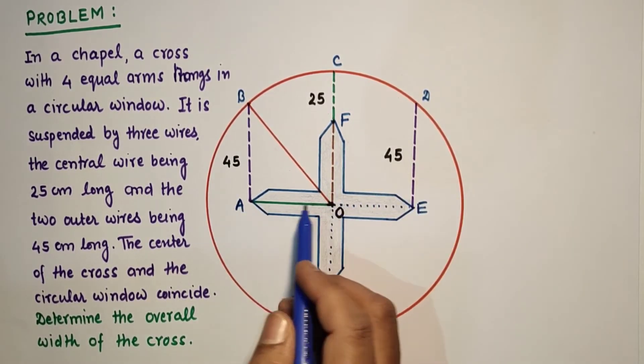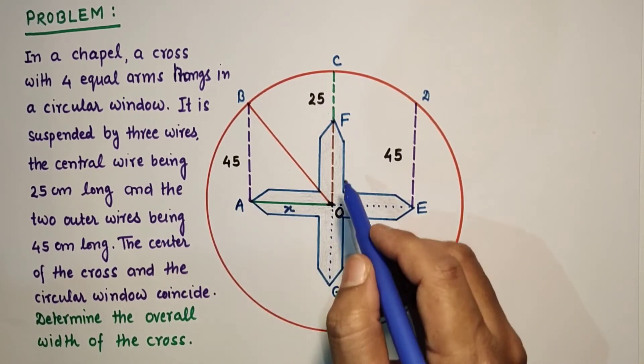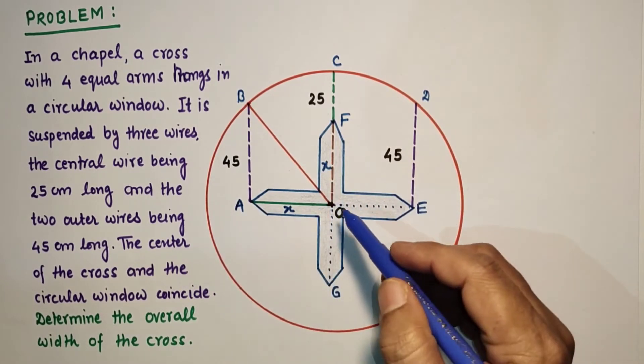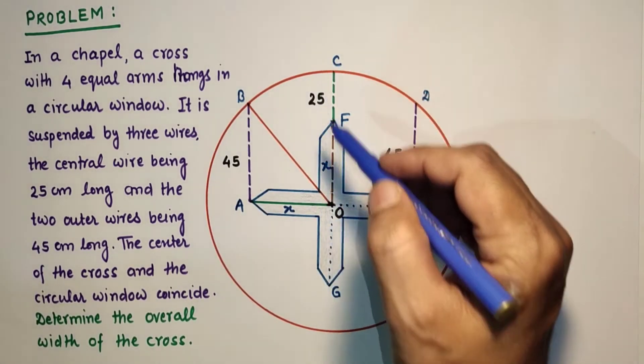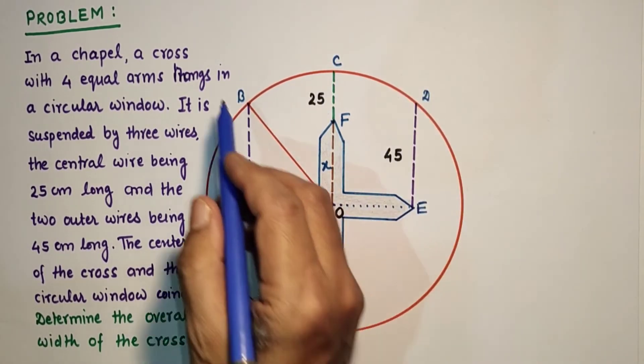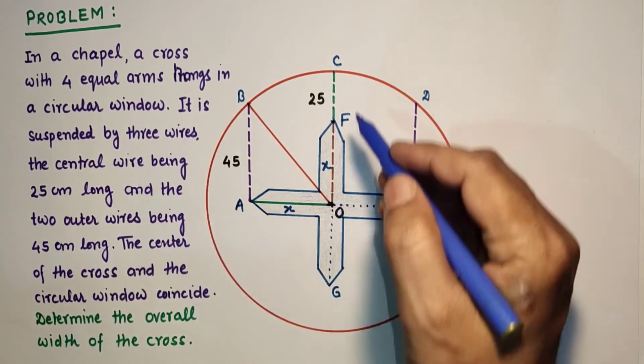If we assume AO as X, so this FO will also be X. From O to C, this is radius of the circle. OC is equal to OB, because center to circumference is radius.